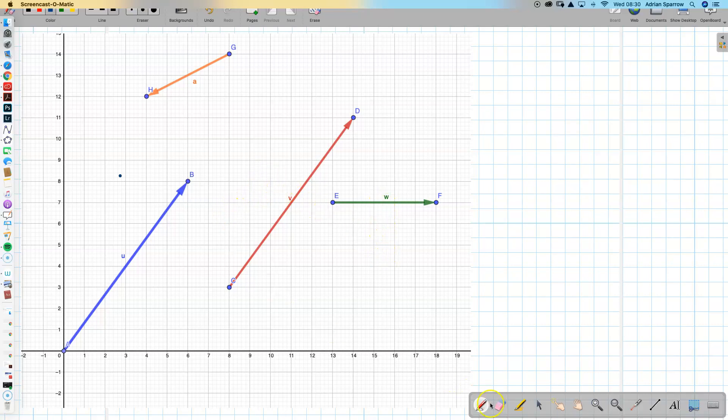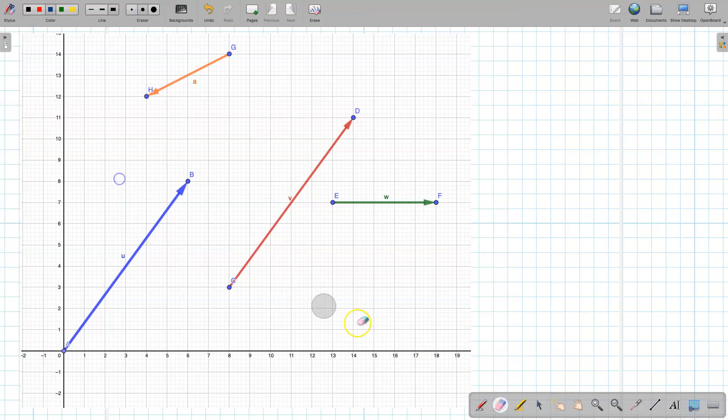Let's have an introduction to vectors. So here we've got 1, 2, 3, 4 different vectors on here and these are all in two dimensions. We're using the x and y axis to describe them and they're called column vectors.